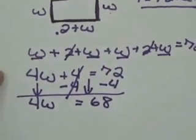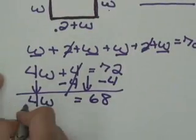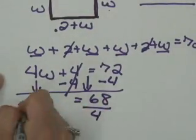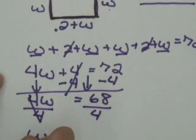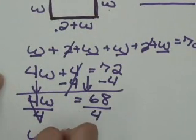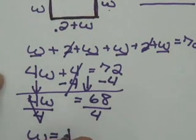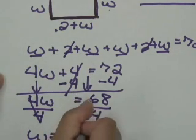Now the next thing I need to do is divide by 4 in order to get W by itself. Equals, 4 goes into 68 once into 6 with a remainder of 2. You have 4 into 28, which gives 7.